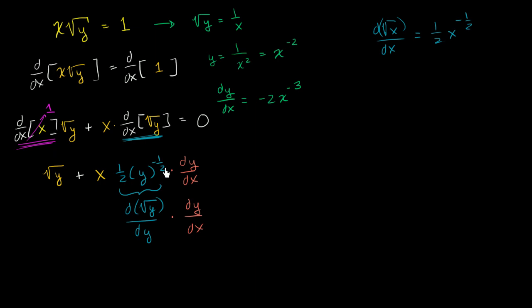So we get this on the left-hand side, and on the right-hand side we just have 0. And now we can attempt to solve for the derivative of y with respect to x.